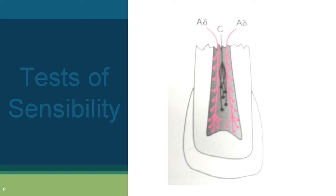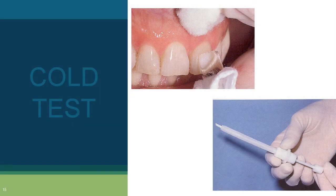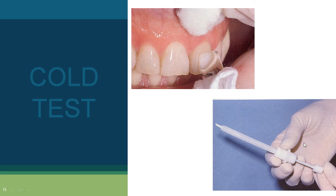These tests are not called vitality tests; vitality tests assess the blood supply of the tooth. For the cold test, materials used include cold air blast, cold water bath, ethyl chloride spray, sticks of ice, or CO2 sticks. CO2 sticks are now almost outdated because at minus 78 degrees Celsius they can cause craze lines or infraction lines in enamel.